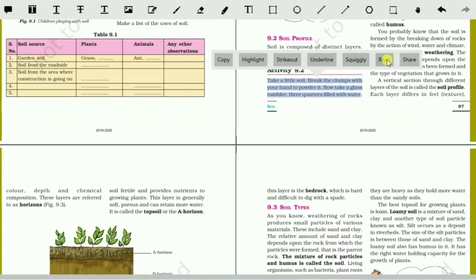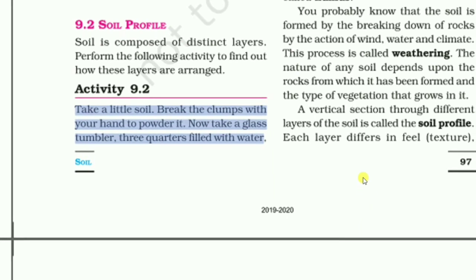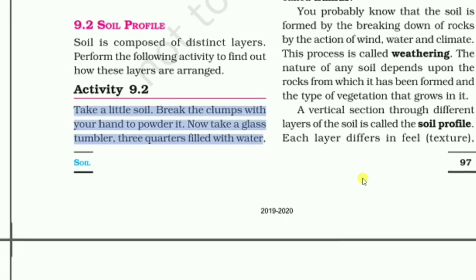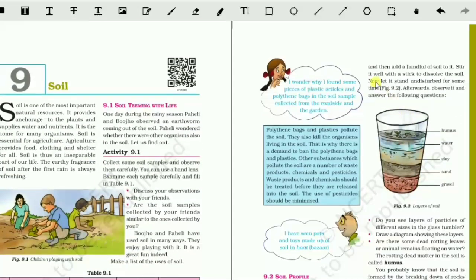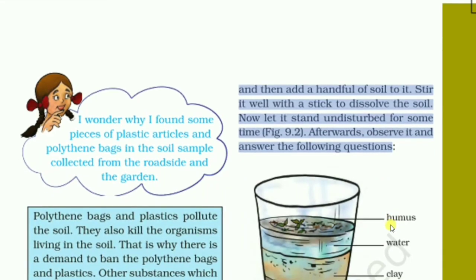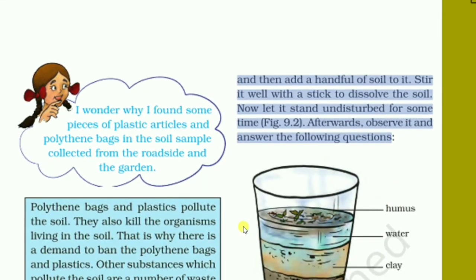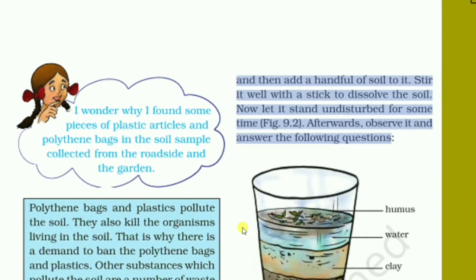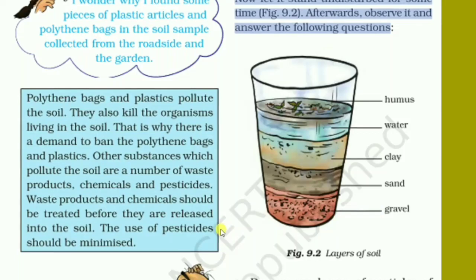Take a little soil, break the clumps with your hand to powder it. Now take a glass tumbler three-quarters filled with water. Then add a handful of soil to it, stir it well with a stick to dissolve the soil. Now let it stand undisturbed for some time. Afterwards, observe it and answer the following questions.